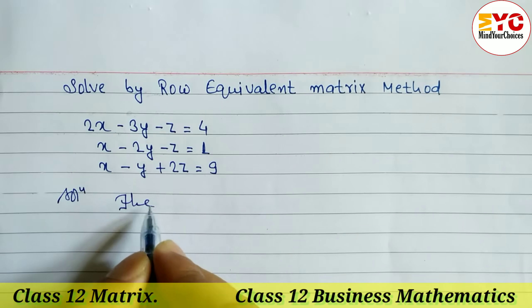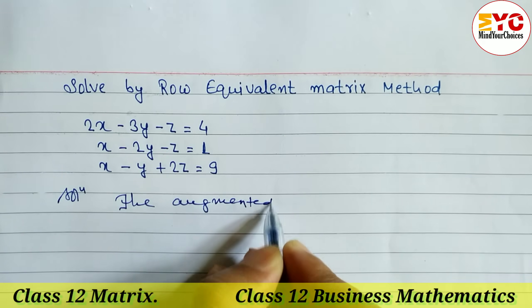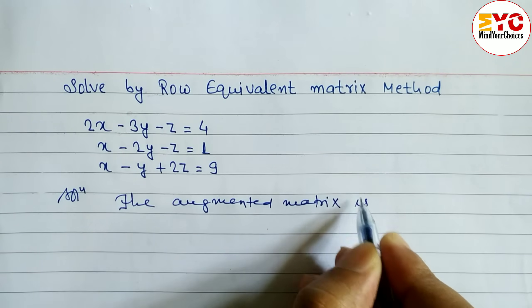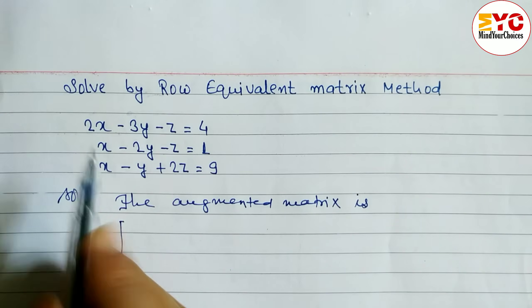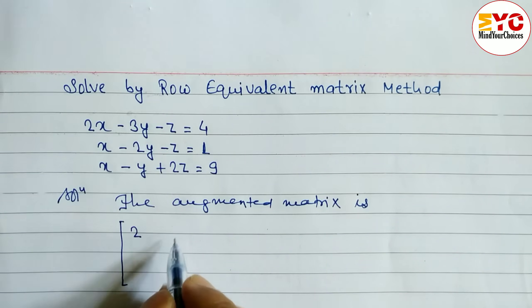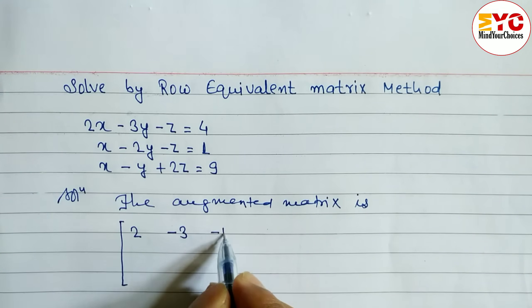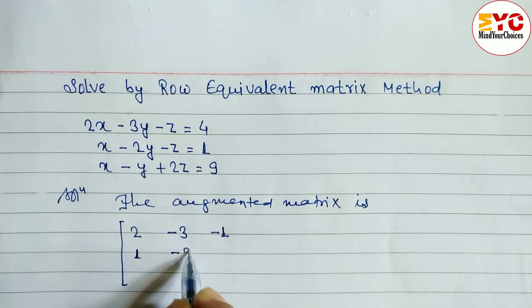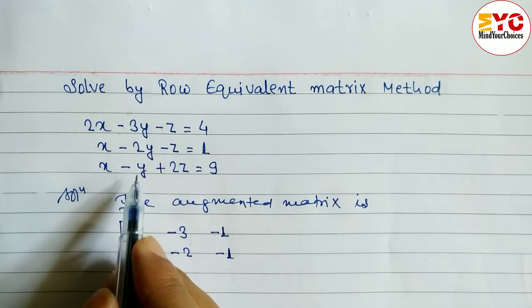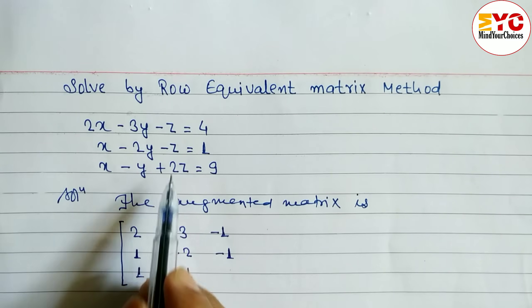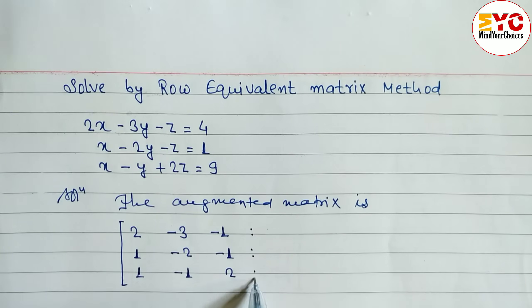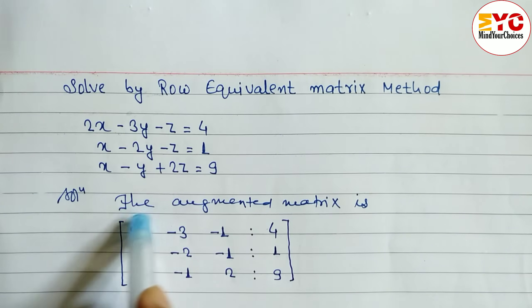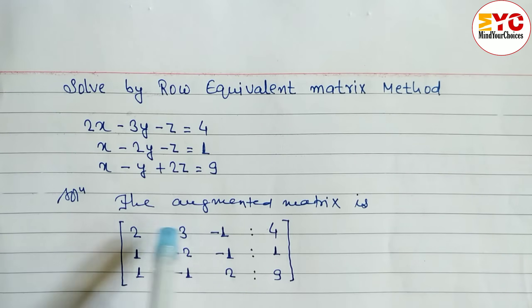The augmented matrix is formed by taking just the coefficients of x, y, and z. The coefficient of x is 2, coefficient of y is minus 3, and the coefficient of z is 0, so we write 1. For the second equation: coefficient of x is 1, coefficient of y is minus 2, coefficient of z is minus 1. For the third: coefficient of x is 1, coefficient of y is minus 1, coefficient of z is 2. Then we write the constants: 4, 1, 9.